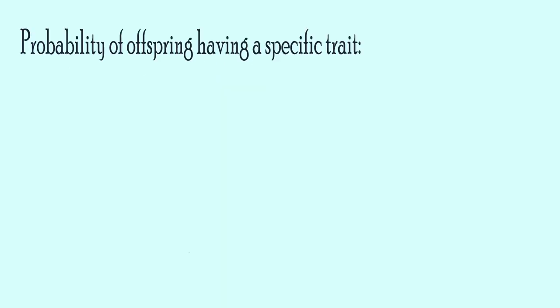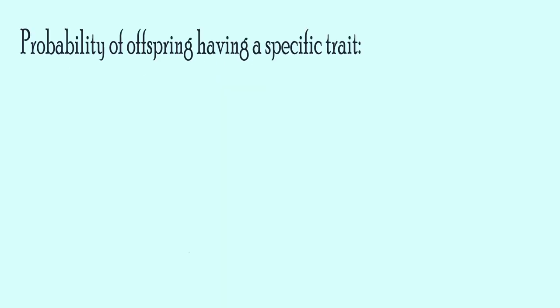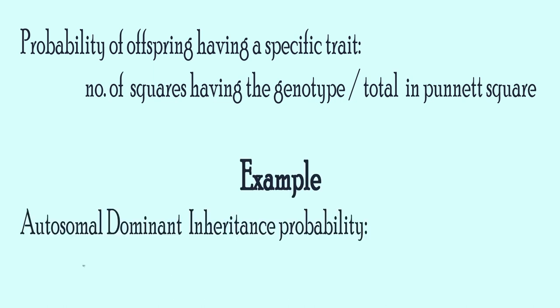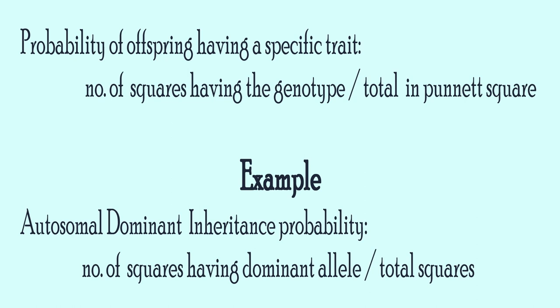To determine the probability of an offspring inheriting a specific trait, we simply count the number of boxes in the Punnett square that represent the genotype for that trait. For example, considering autosomal dominant inheritance, we would count the number of boxes representing the dominant allele. The probability of an offspring inheriting the trait equals the number of boxes representing the trait divided by the total number of boxes in the Punnett square.